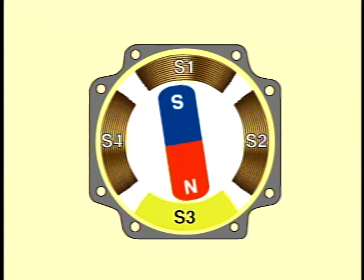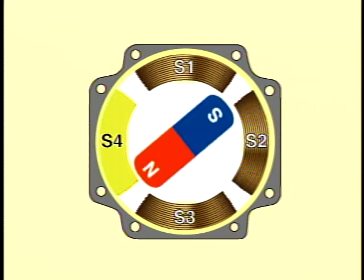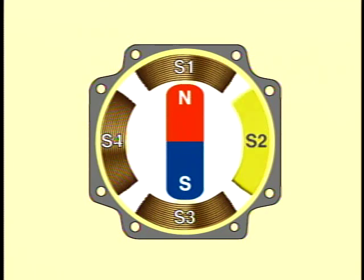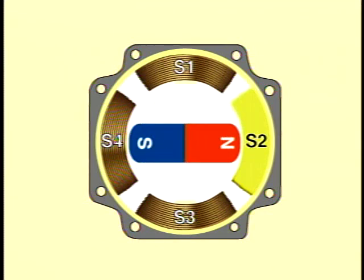As you can see, the direct current is turned on in the coils in sequence, which then rotates a magnetic field and moves the rotor step by step.